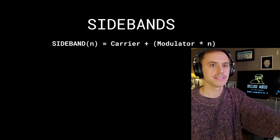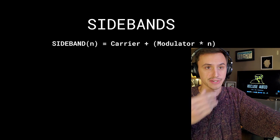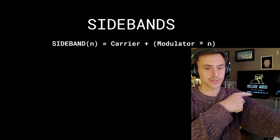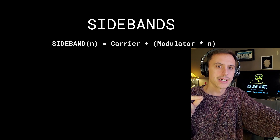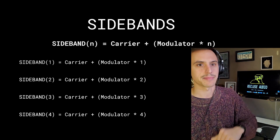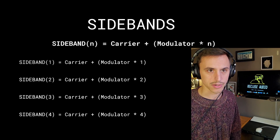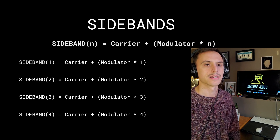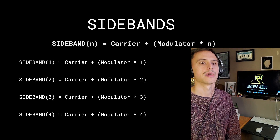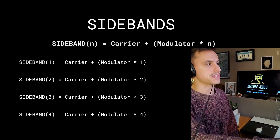A sideband n is equal to the carrier frequency plus the modulator frequency times n. So the frequency of sideband 1, 2, 3, 4, 5, and so on — we're only going to deal with positive today — is equal to the carrier plus the modulator times n. Sideband 1 equals carrier plus modulator times 1, so just plus the modulator. Sideband 2 equals carrier plus modulator frequency times 2. Sideband 3 is carrier plus modulator times 3, and so on. Let's give you an example.